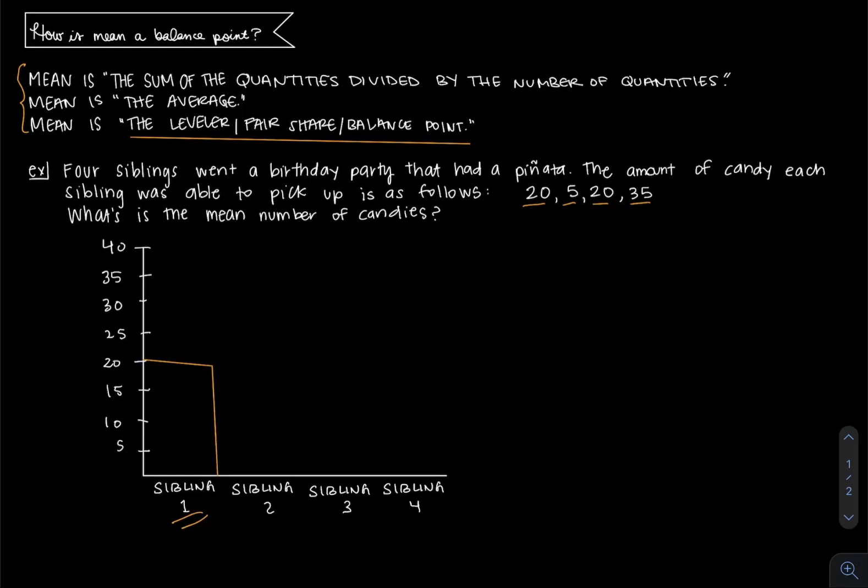It doesn't have to be perfect, just as close to being 20 as you can get it. The second sibling got five pieces, so their bar is going to be much shorter. And see how each bar is about the same width, because they're all equal siblings, even though they got different candies.